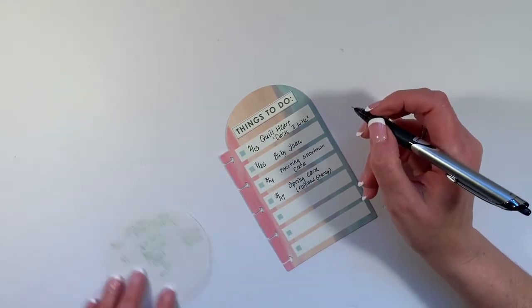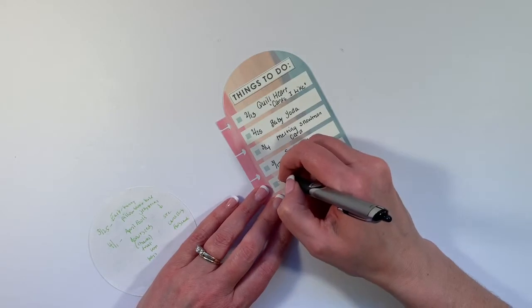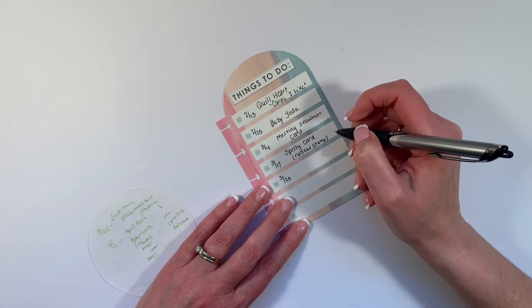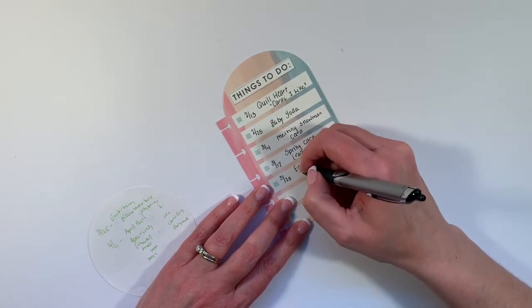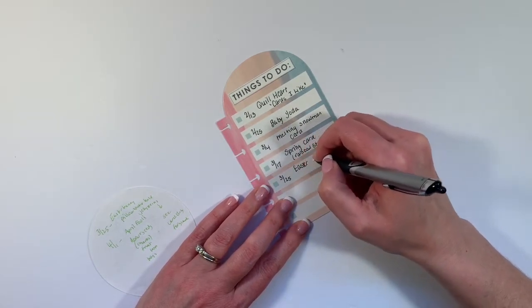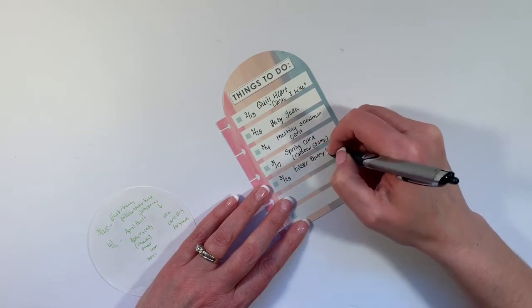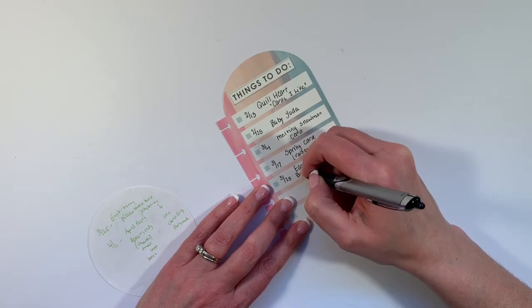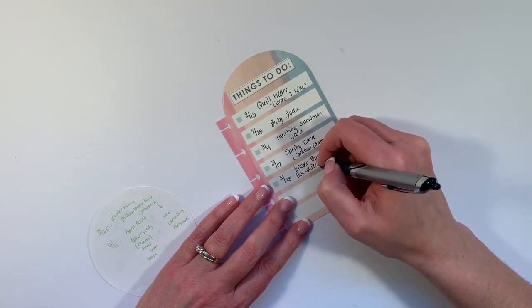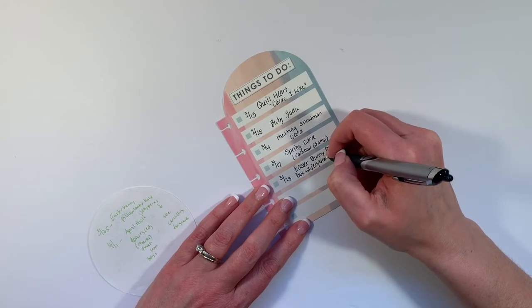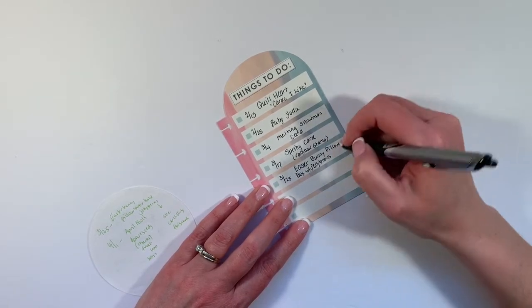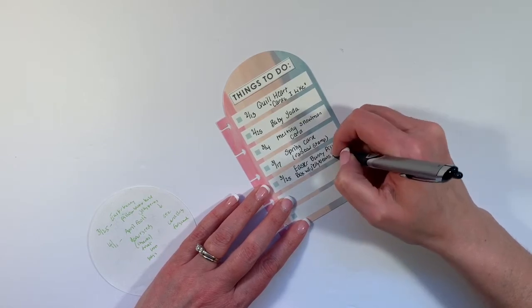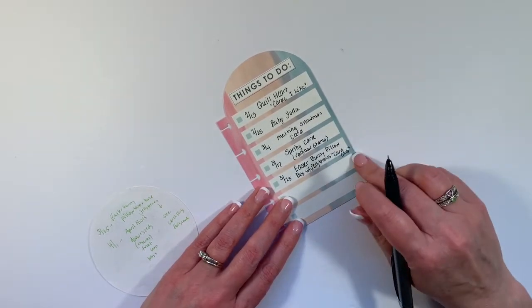And then, on the 25th, we're going to do an Easter Bunny pillow box with jelly beans, which means I need to buy those as well. And that is saved under Card Club, so I'll find the directions there in my Pinterest account.